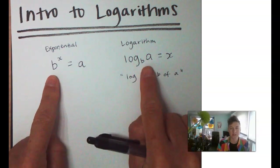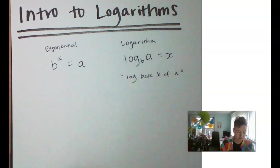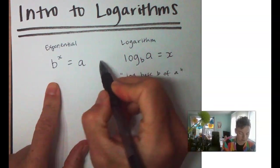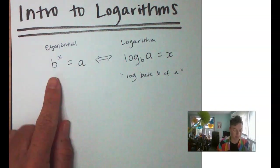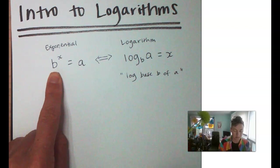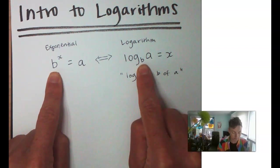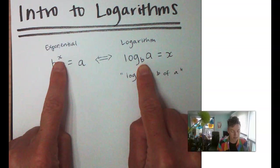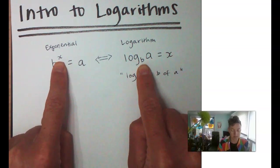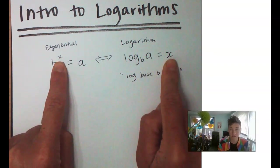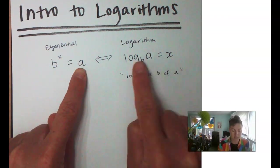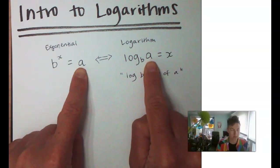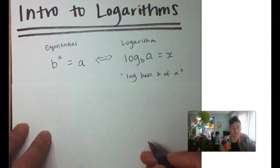Now, use the same letters here because they are going to be the same letters in these equations. Like, they're the same numbers here. So, the base of this exponential becomes the base of the logarithm. The exponent of the exponential becomes the answer of the logarithm. The answer of the exponential is what we're taking the log of.